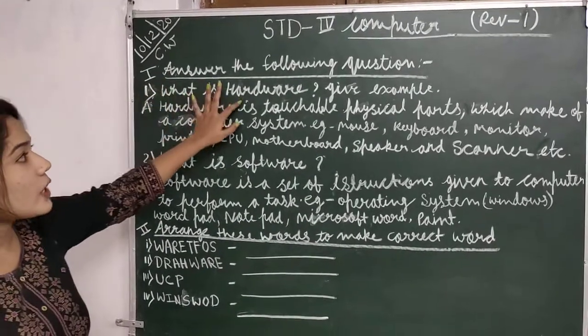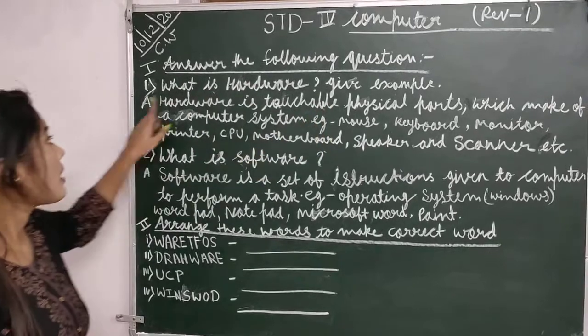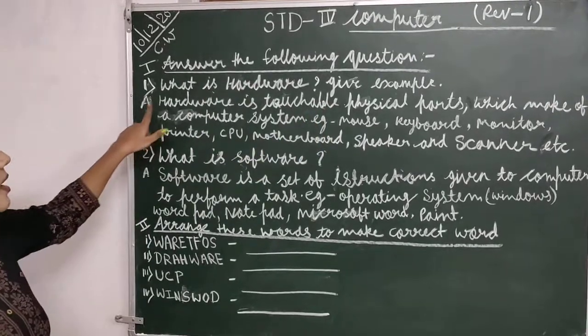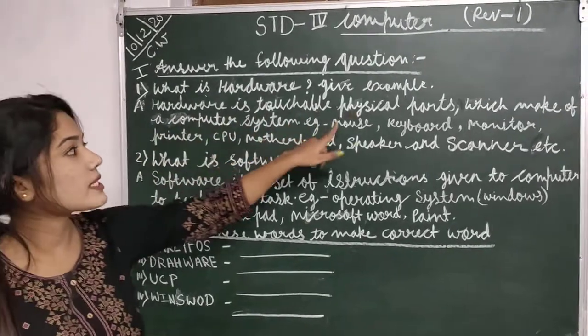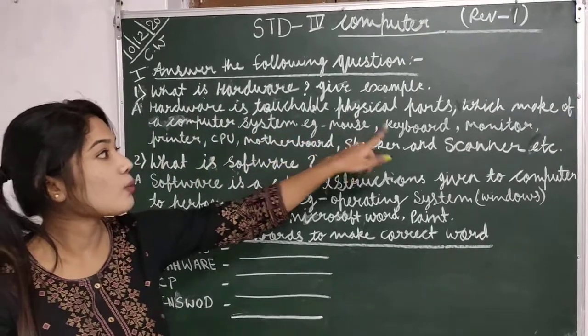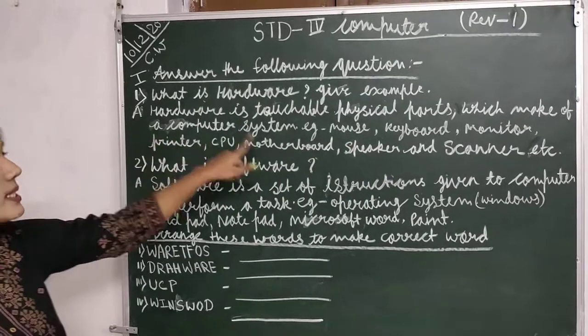What is hardware? Give an example. Answer: hardware is the touchable physical parts which make up a computer system.